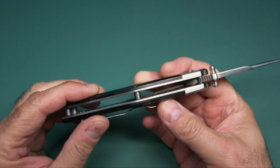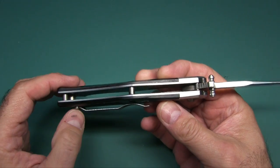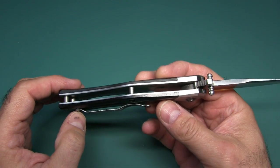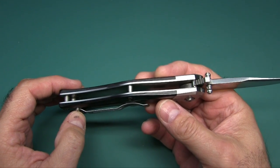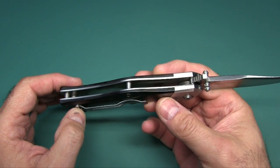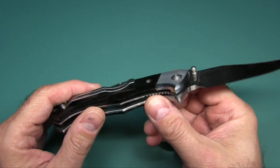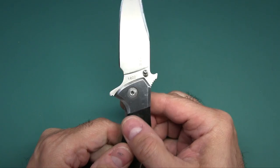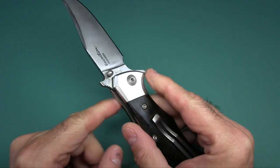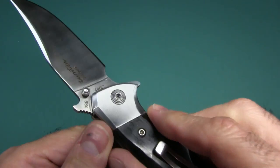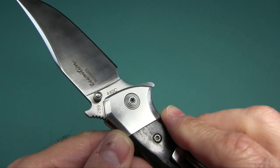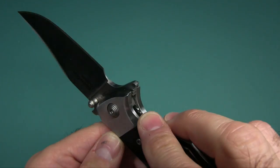Torx screw construction, open pillow design, stainless steel liners. They are not skeletonized, so it does weigh quite a bit. It's 6.25 ounces. You also have a torx screw for your pivot so you can adjust it. No weird hardware there, just standard torx screw construction.